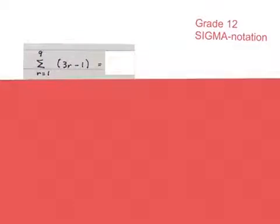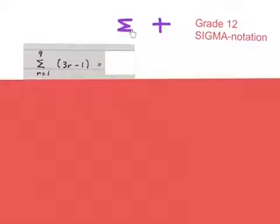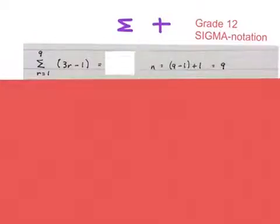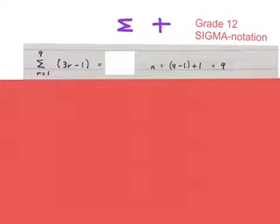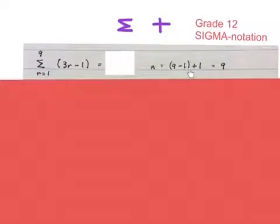A typical question can look like this. They give you this and say calculate the following — that's all they say. First thing we need to know is that sigma means add the terms in this series. We now have to find out how many terms are in this sequence, and we will learn a little rhyme: top minus bottom plus 1. So 9 minus 1 is 8 plus 1 is 9 — there will be 9 terms in this series.